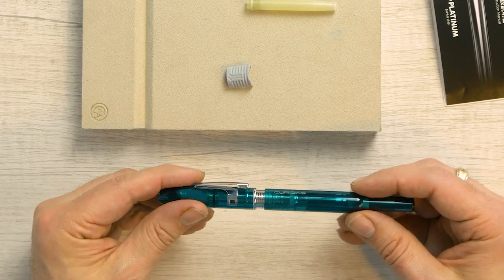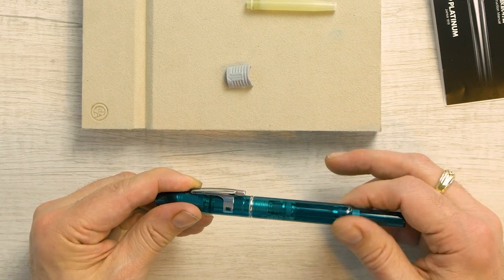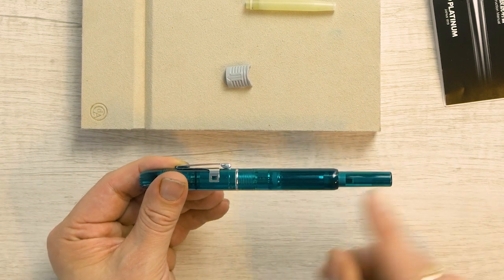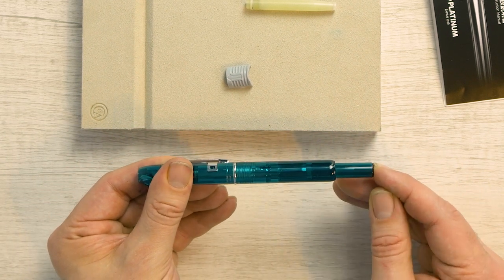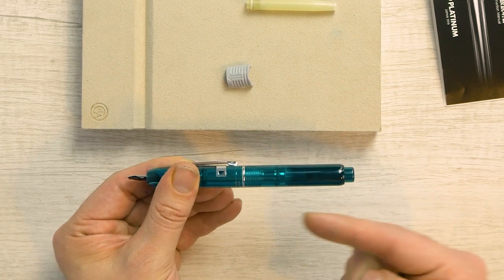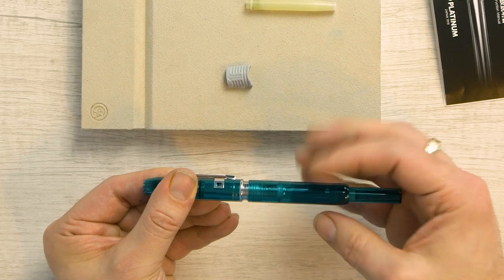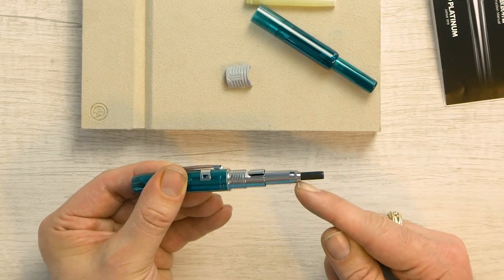we'll see when we screw this into place that when we press down, we're actually pressing on the back end of that cartridge cover to push the nib unit forward. So it doesn't press down on here, it presses down on here.